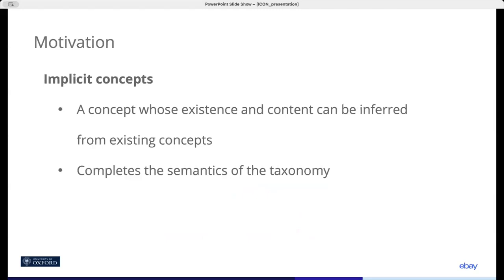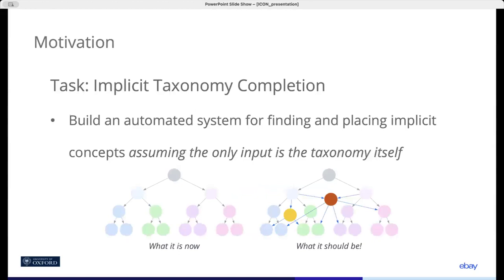Formally, we are looking for implicit concepts, the main characteristics of which is that their existence and semantics can be entirely inferred from existing concepts. The task we're facing is to build an automated system that finds these implicit concepts and inserts them into the taxonomy.